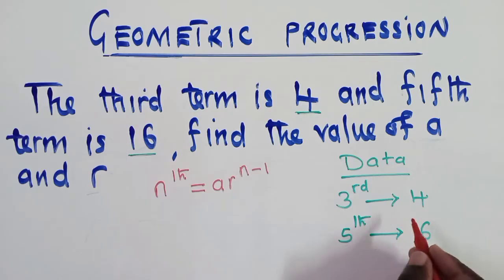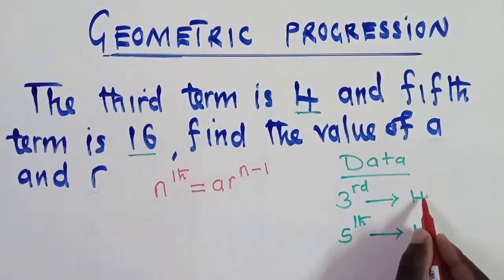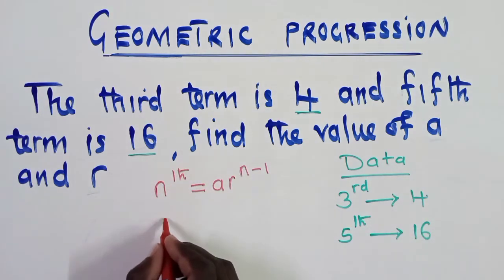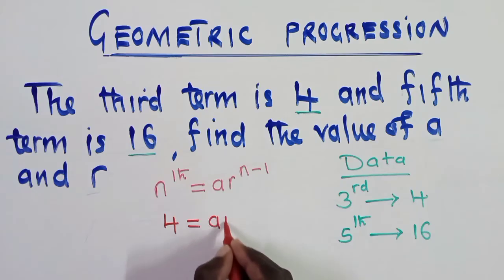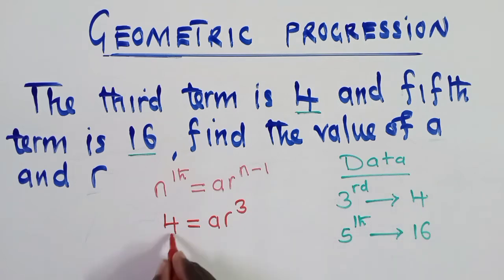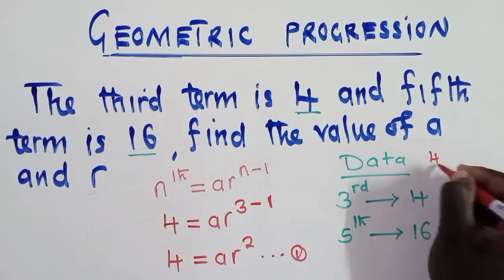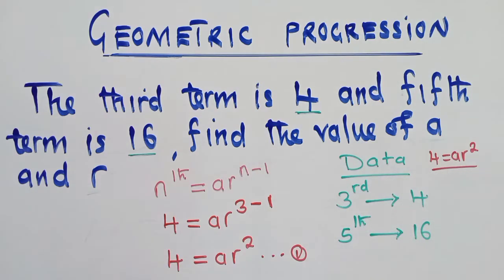For the third term, n = 3, so we write: 4 = a · r^(3−1), which simplifies to 4 = a · r². This is equation 1. We keep this equation safe and come back to use it.